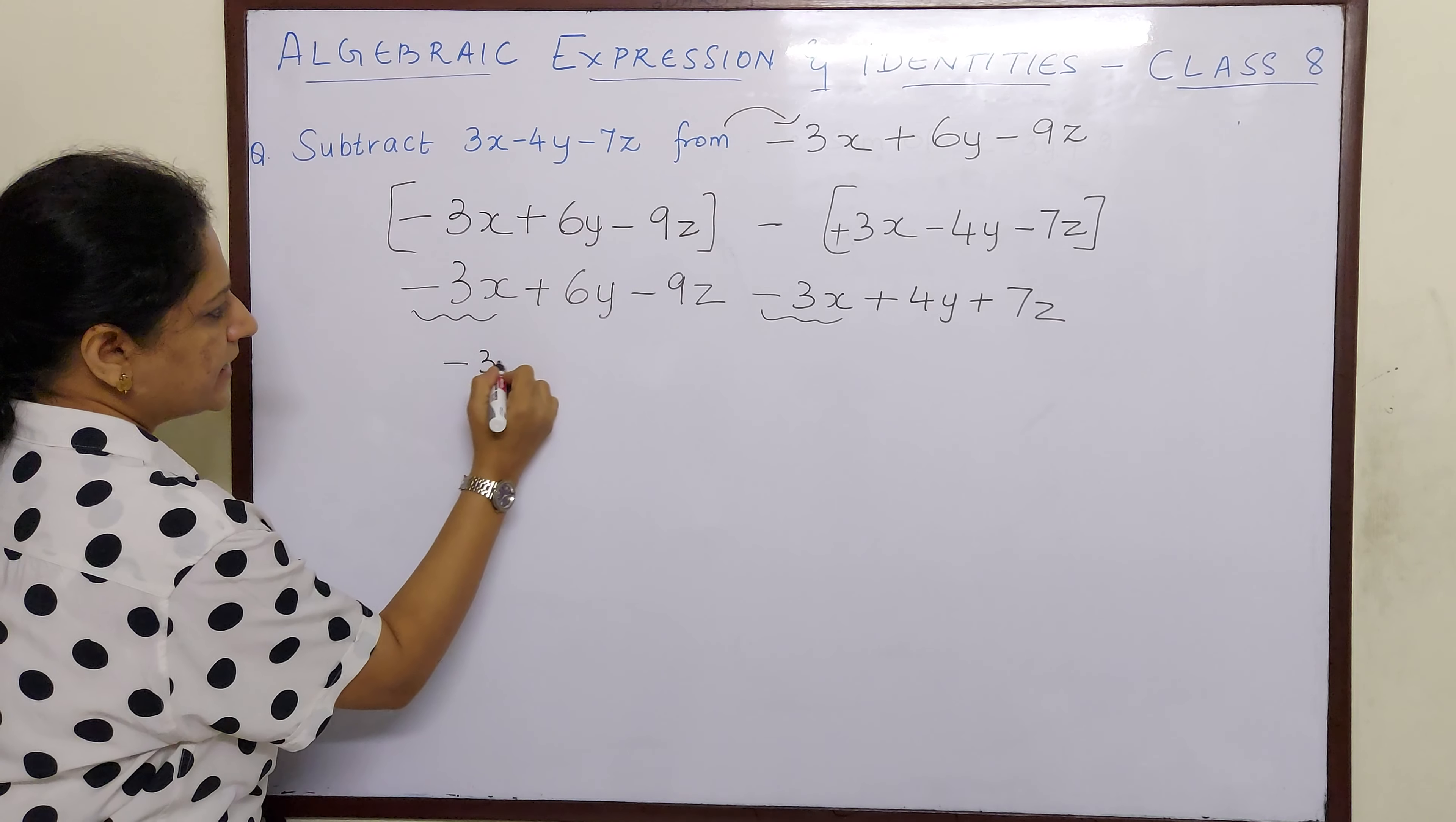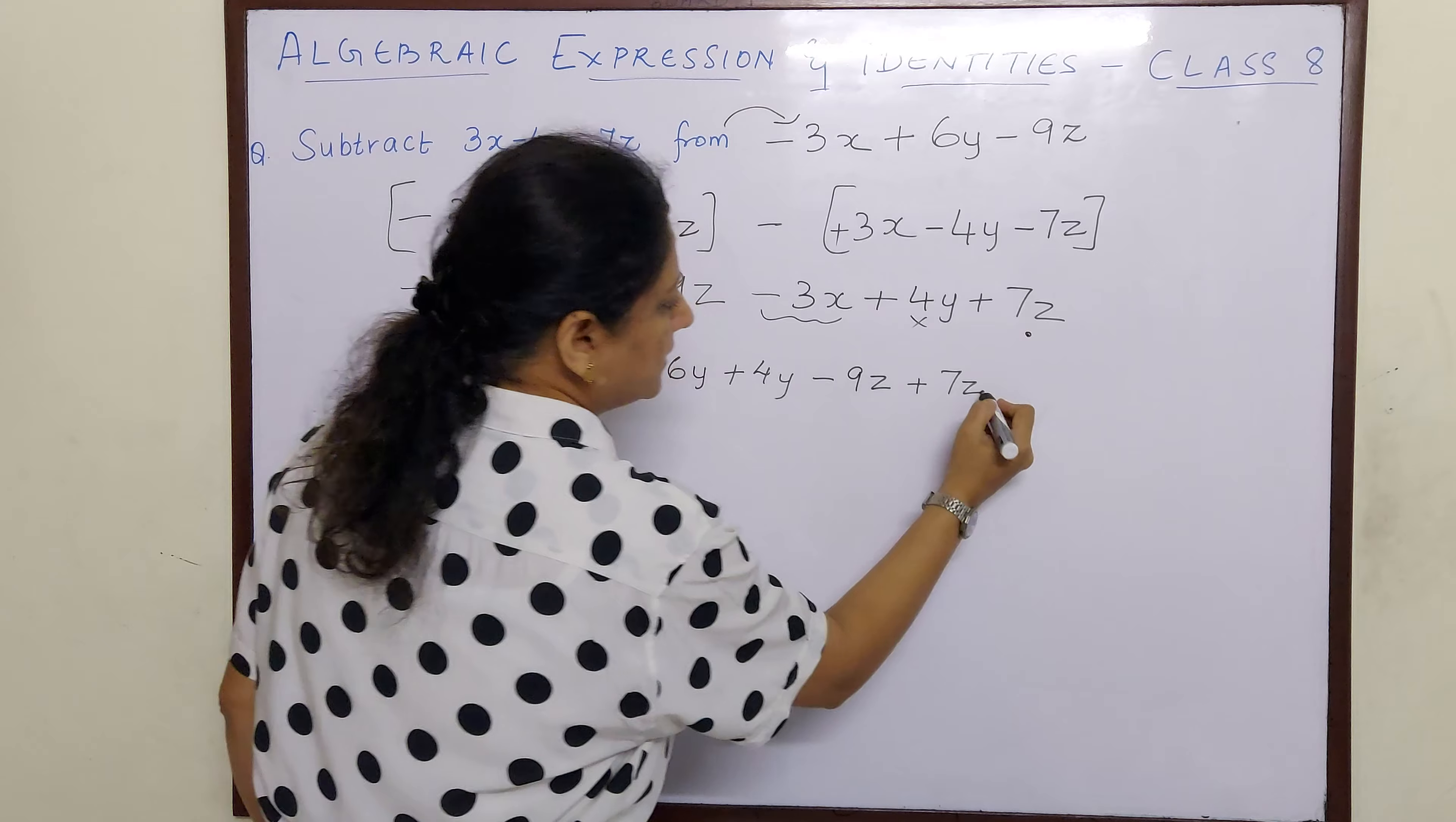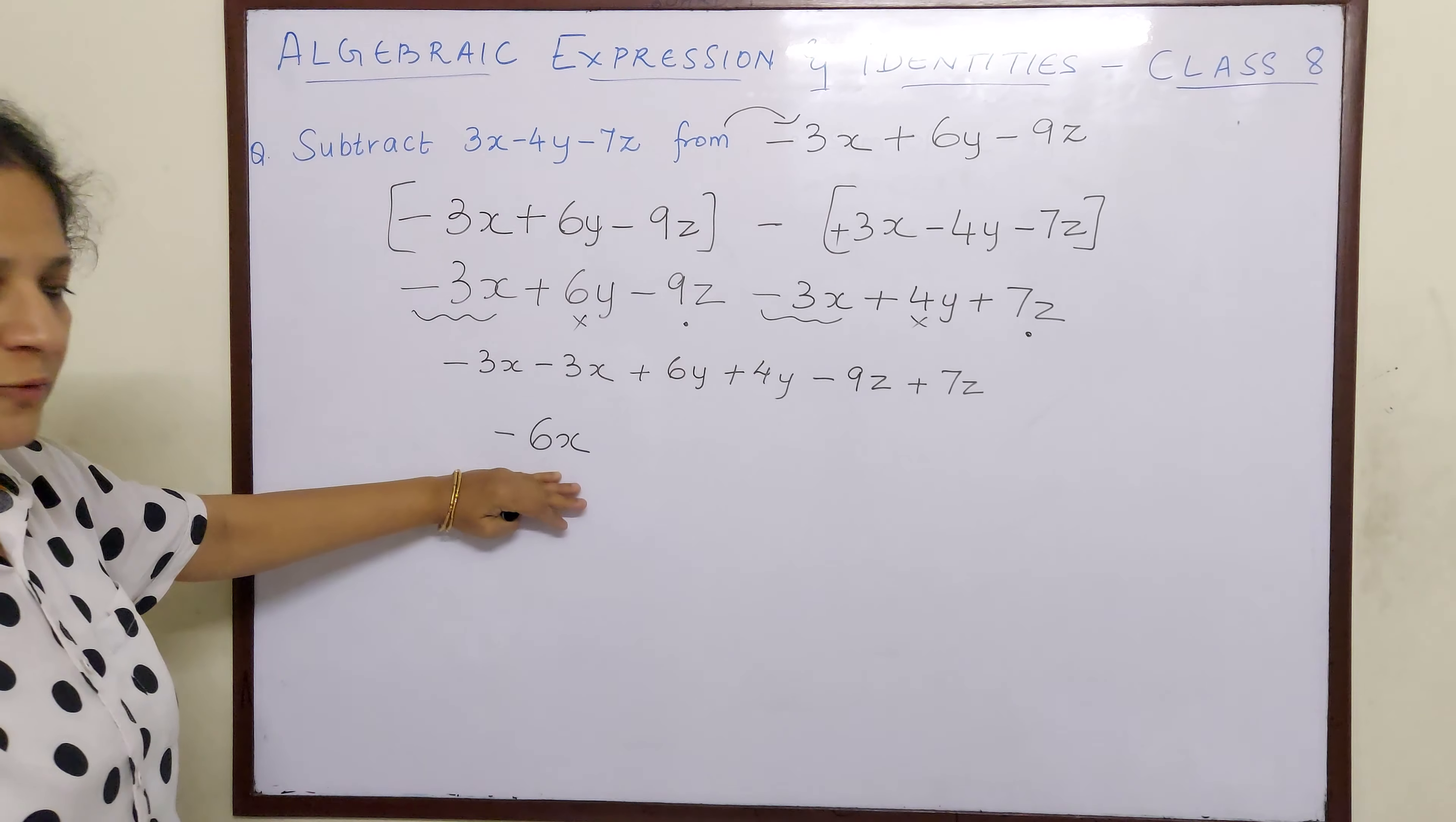Now our next step is to bring the like terms together. So minus 3x minus 3x, then comes y: 6y plus 4y, so plus 6y plus 4y. And then minus 9z plus 7z: minus 9z plus 7z. You may be wondering why I am putting these signs. See, when you put this, children, you know that you have not left any algebraic expression and you have brought down everything. Minus 3 minus 3 is minus 6x. So we have brought the like terms together and we are doing the addition.